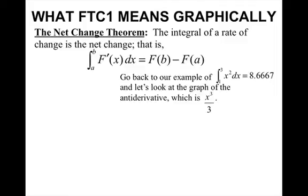If we go back to our example of x squared from 1 to 3, which we know is 8 and 2 thirds, and let's look at the graph of the antiderivative, which we now know is x cubed over 3. If we were to graph these, this curve right here, the blue curve, that is my x cubed over 3.